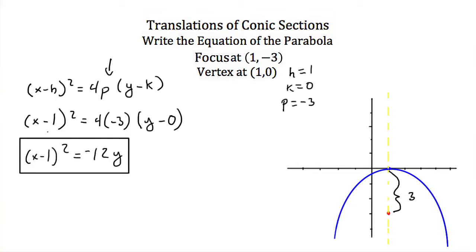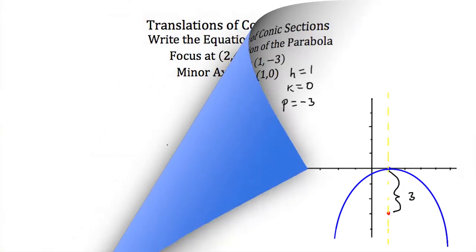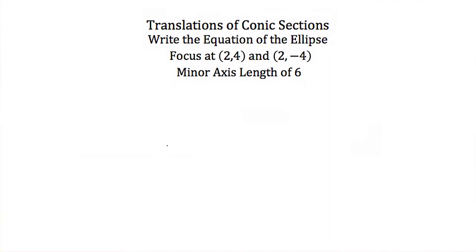And this is the standard equation for a parabola with focus at (1, -3) and vertex at (1, 0). Now let's try writing an equation of an ellipse with foci at (2, 4) and (2, -4), and the minor axis length is 6.